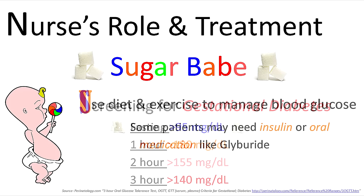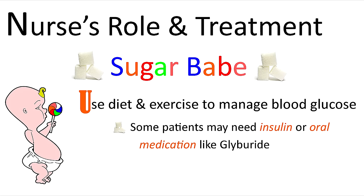U is for using diet and exercise to manage blood glucose. This is usually what is ordered for women who have gestational diabetes, because it can help keep blood glucose within normal range. However, some patients may need insulin or oral medication like glyburide.